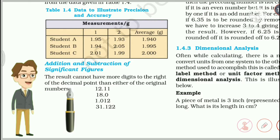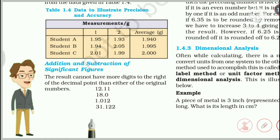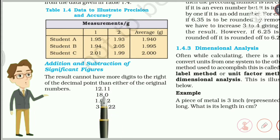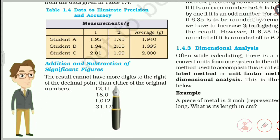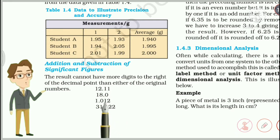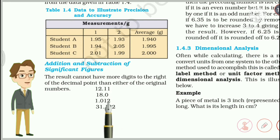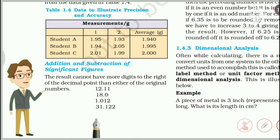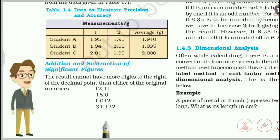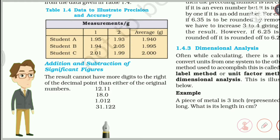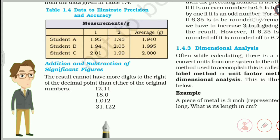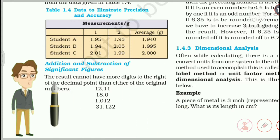Now we are going to see addition and subtraction of significant figures. You can see they have given some digits with decimal points — like 12.11, which has two digits after the decimal point. Here there is only one decimal digit, and here there are three decimal digits. So if the answer comes to something like 50, the question is: how many digits should I give after the decimal point — 50.111, 50.11, or 50.1?